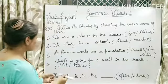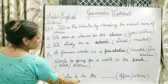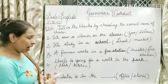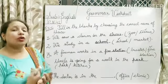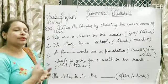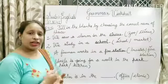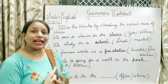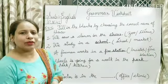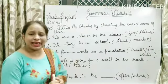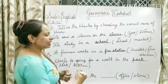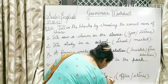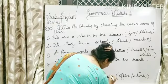Coming to the fifth one. The doctor is in the blank. Jo doctor hai, woh kahan kaam karta hai? Jab aap kabhi hospital mein jaate ho, toh doctor kahan beithte hain — aapne office mein, aapne clinic mein? Unka jo room hota hai, that is known as clinic. So the correct answer is clinic. You have to tick and write C-L-I-N-I-C, clinic.